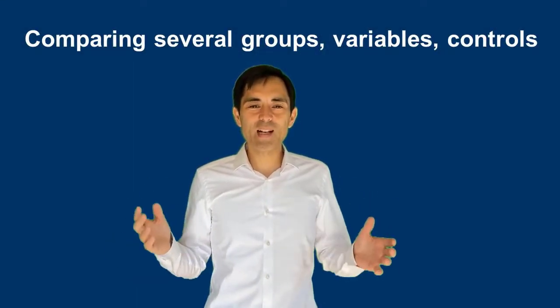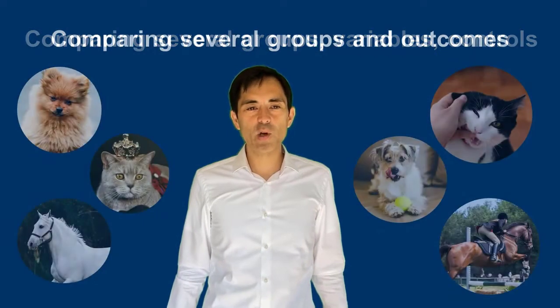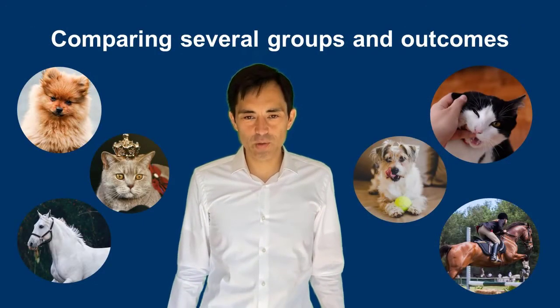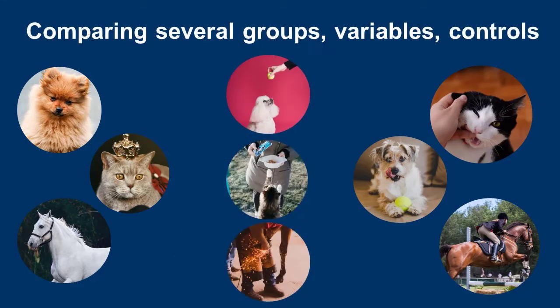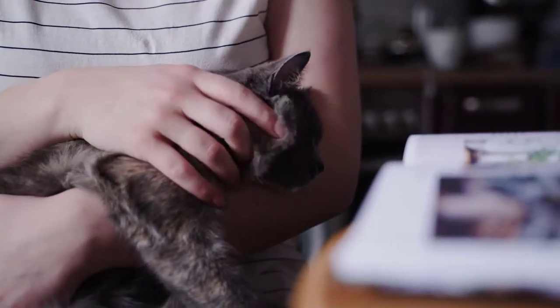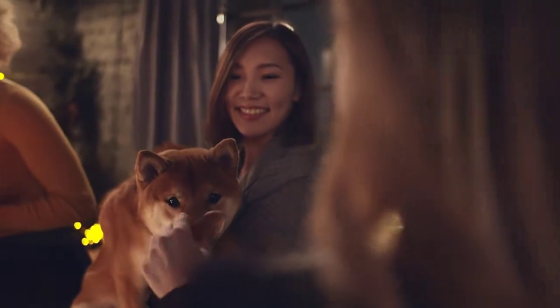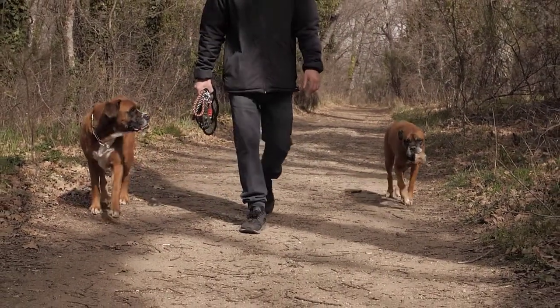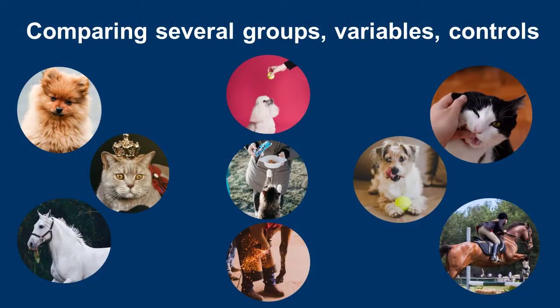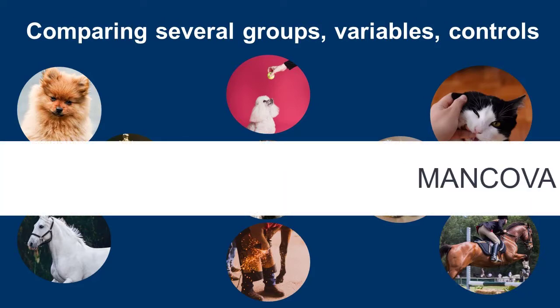Reality can be even more complex. We already have the case where we compare several groups and look at several outcome variables. Now we can also think of additional controls, confounding variables, or covariates. These animals have different degrees of loyalty and number of accidents, but that may also depend on other factors — such as how much you care, how much time you spend with your pet, how often you accompany the animal. That has most likely a strong effect on loyalty or number of accidents. MANCOVA allows us to consider these additional covariates.